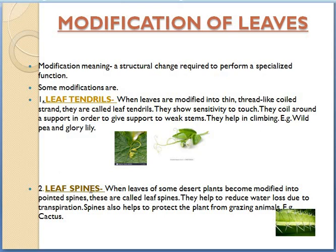The next kind of modification is leaf spine. In certain plants, the leaves change into spines or thorns — a very common example is cactus. When leaves of some desert plants become modified into pointed spines, they are called leaf spines. Spines help to reduce water loss due to transpiration, and also help to protect the plant from grazing animals, since no animal would want to eat a plant with thorns.